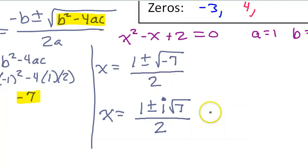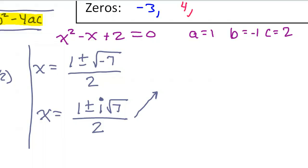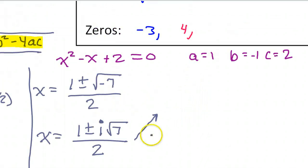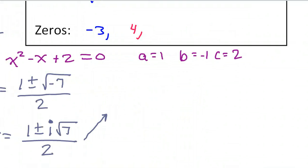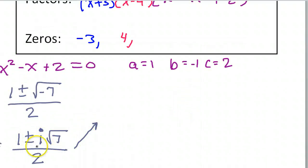Now just please understand that this represents two separate solutions. You know what, maybe I'll just put it right in the old answer box. If I've got 1 plus or minus i root 7 over 2, that is 1 plus i root 7 over 2 and 1 minus i root 7 over 2. And I would like you to write it separately please.